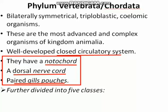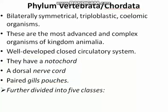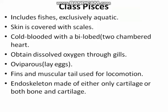Phylum Vertebrata is further divided into five classes. Let's start with the first one — class Pisces. Class Pisces includes all fishes and these are exclusively aquatic, meaning all organisms in this class live in water, either in fresh water or marine. Their skin is covered with scales, as you might have observed in various fishes.